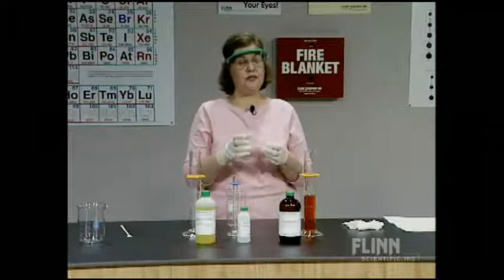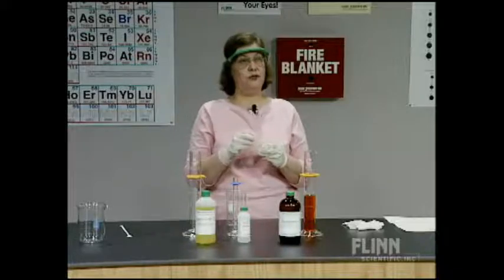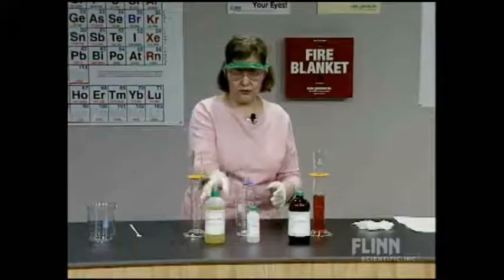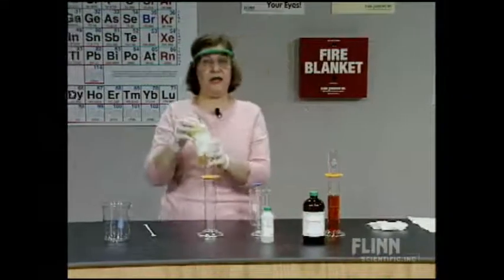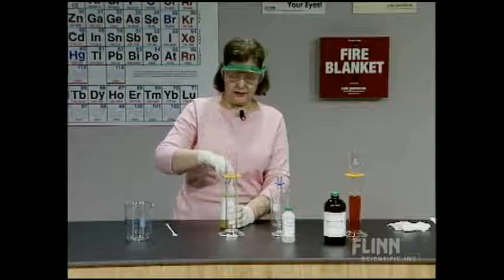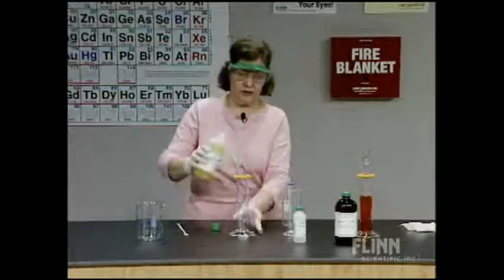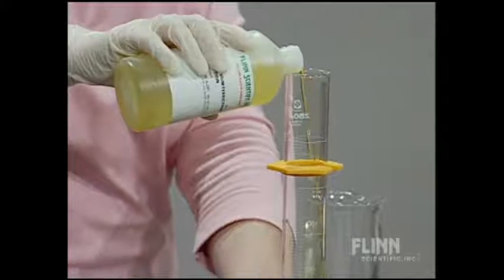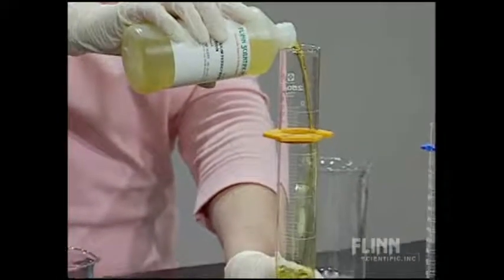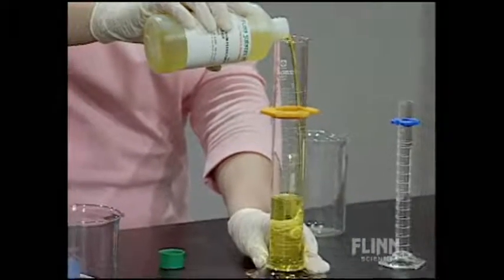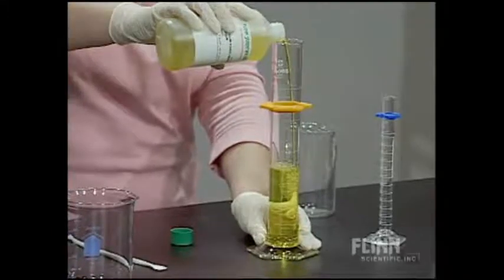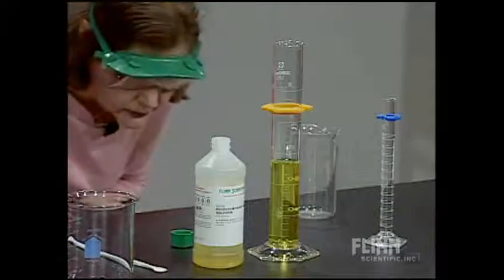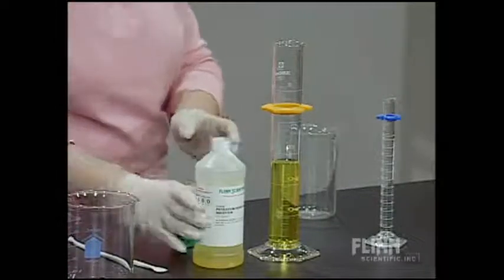The fluorescein and the calcine are both fluorescent dyes, and what they're going to do is absorb some of the light energy initially produced by the luminol. The other solution I have is potassium ferrocyanide, which is going to be the catalyst in this reaction. I need about 140 milliliters of that — it's a yellow solution, which is just the color of the ferrocyanide ion.